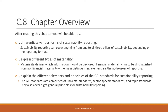The GRI standards are comprised of different elements. They have universal standards, then sector-specific standards that can be applied to specific industries, and there are also a large number of topic standards for different sustainability-related topics such as emissions, water use, and how to treat employees. They also cover eight general principles for sustainability reporting, and we will discuss what these are and why they are relevant for sustainability reporting in the chapter.